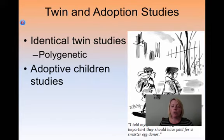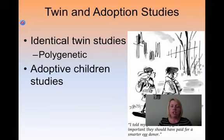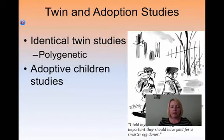Identical twin studies are super important because we have the same gene set, so any differences would be most likely attributed to environment. Adoptive children studies are also important for intelligence because they help us figure out what happens genetically in terms of deviation towards biological parents versus the environmental influences of adoptive parents.